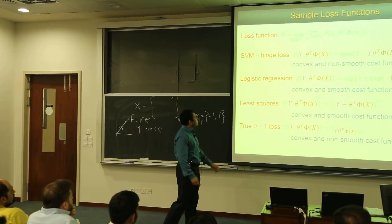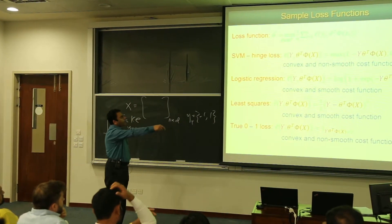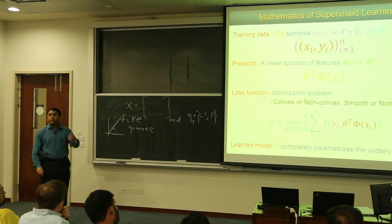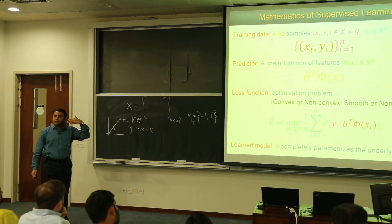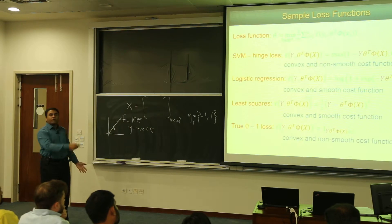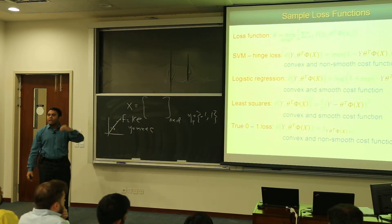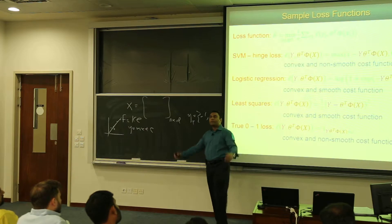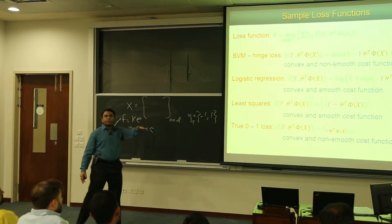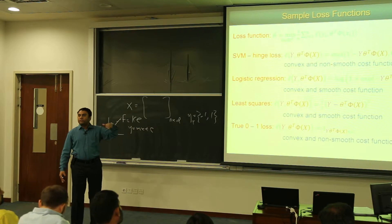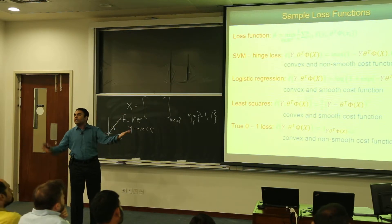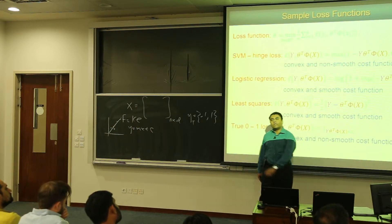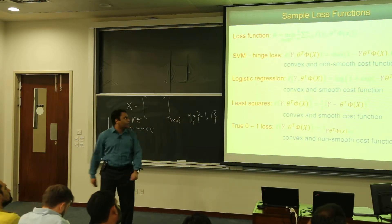Logistic regression takes a different form — it is not only convex but also smooth. We are trying to solve this optimization problem using gradient descent, which requires a convex problem, because convex problems have global optimizers — every local minimizer is a global minimizer. I also need smoothness: if the function is not smooth, I can't compute the derivative. Gradient descent means going in the direction of maximum change, so differentiability is essential.